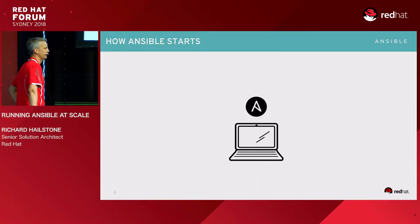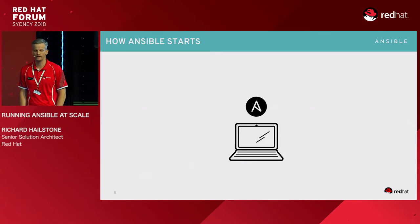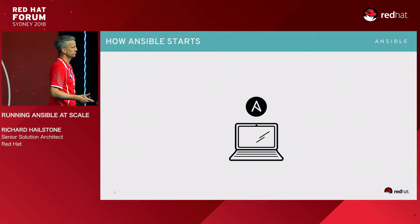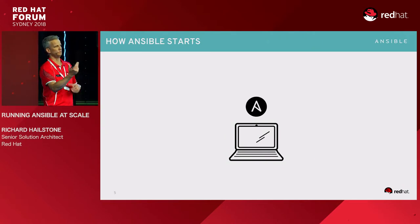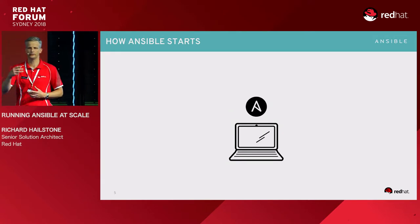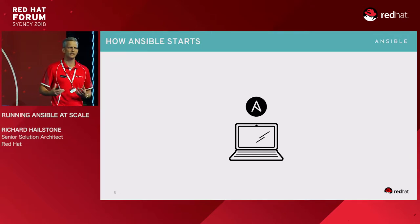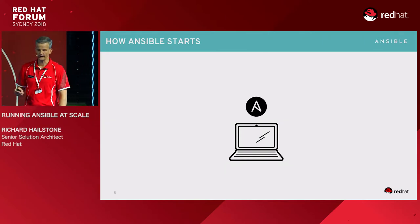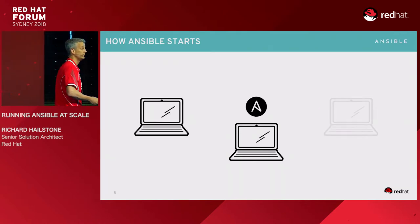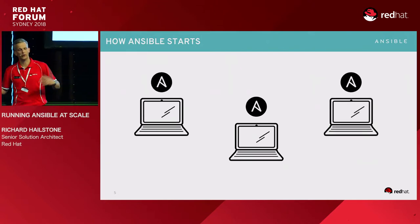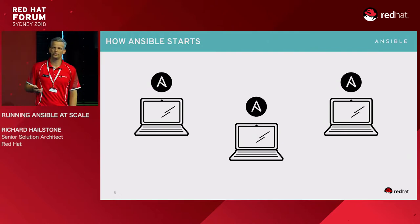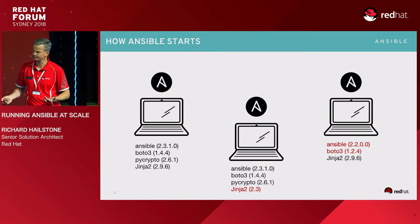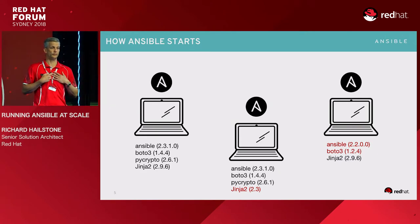How does Ansible start in an organization? Usually we start with a problem, install Ansible on our laptop, write something, and fix the problem. We run that same task across a different server and then across a thousand servers — and it's amazing. Then we tell co-workers, they all install Ansible on their laptops, and when someone tries to run your playbook it won't work for them. The justification becomes 'it works on mine, so it's your problem.'